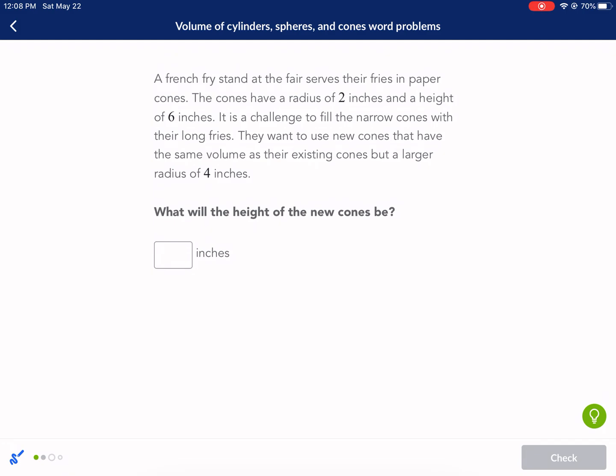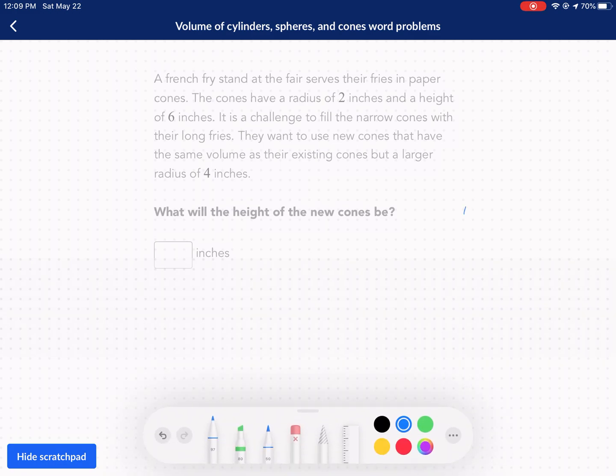Volume of cylinders. Third problem. A French fry stand at the fair serves the fries in paper cones. The cones have a radius of two centimeters. Let's draw this cone. It's got a radius of two centimeters, two inches, and a height of six. It is a challenge to fill the narrow cones with their long fries. They want to use new cones that have the same volume, but a radius of four. What will the height of the new cones be?